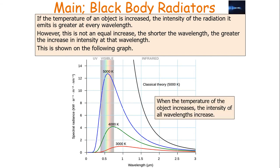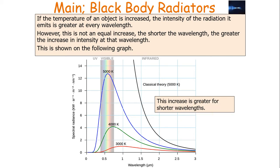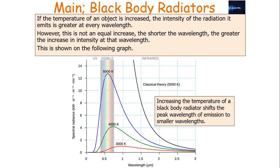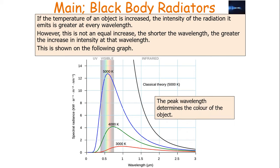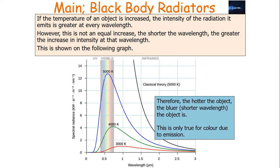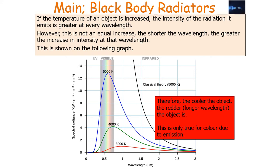When the temperature of the object increases, you must first note that the intensity of all wavelengths increases, but the increase is greater for shorter wavelengths. Increasing the temperature of a black body radiator shifts the peak wavelength of emission to smaller wavelengths, which is very important for our observations because the peak wavelength determines the colour of that object. Therefore, the hotter the object, the bluer or shorter the peak wavelength. Conversely, the cooler the object, the redder or longer the peak wavelength.